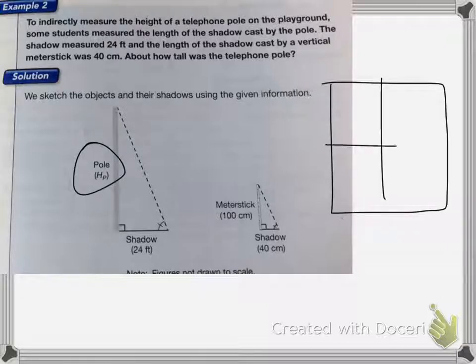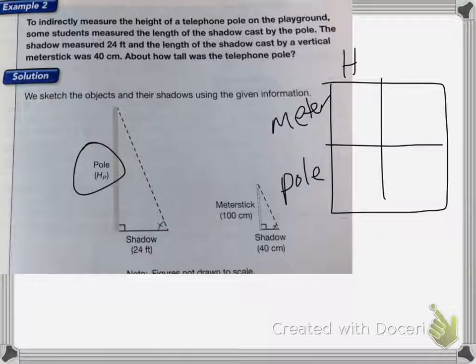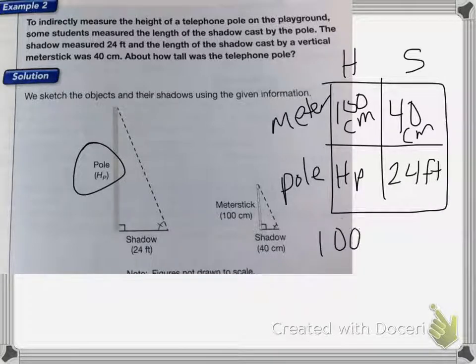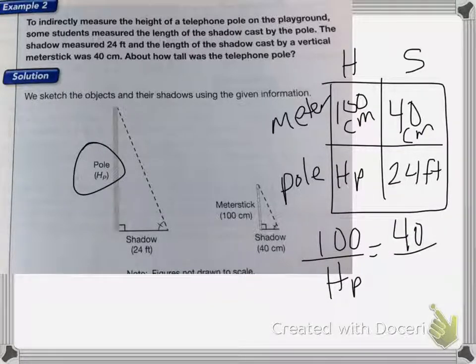So I have my meter stick and the pole. Then I have the height of the object and the shadow. For my meter stick, a meter stick is 100 centimeters tall and the shadow was 40 centimeters long. And the height of the pole I don't know, but I know that the shadow was 24 feet long.